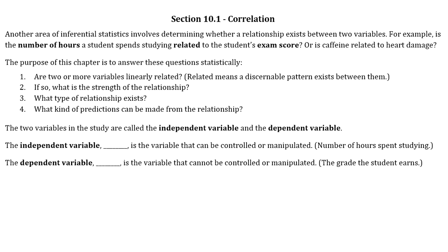The purpose of this chapter is to answer four statistical questions. First, are two or more variables linearly related? When we say related in math, we mean a discernible pattern exists between them. If they are related, the next thing we want to know is what is the strength of that relationship—would we classify it as strong, moderate, or weak?